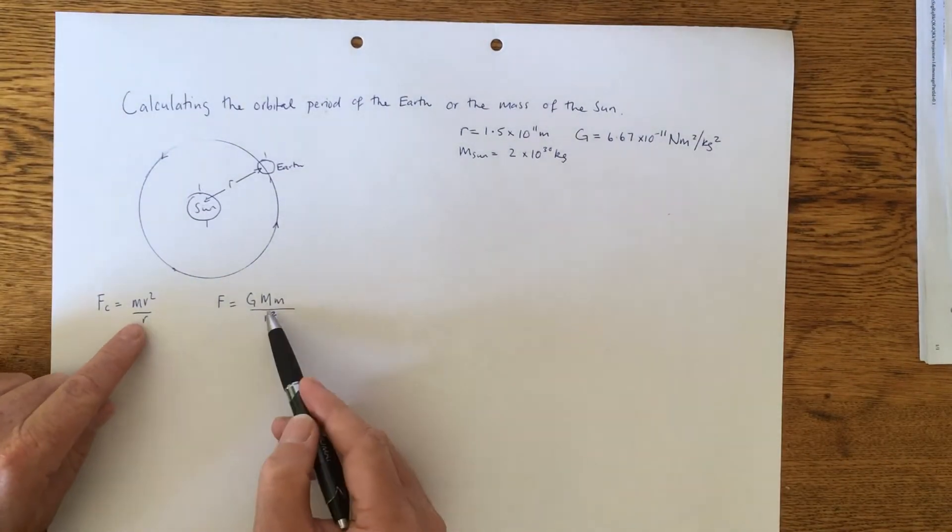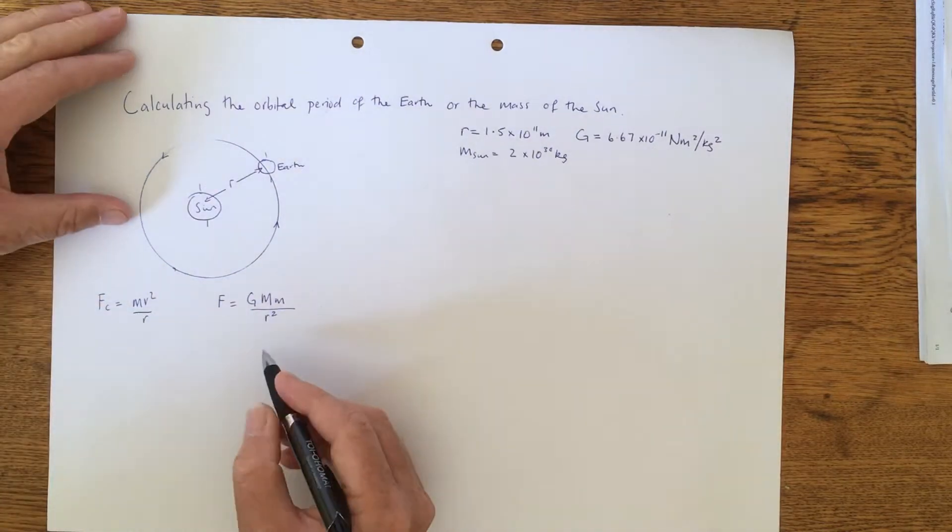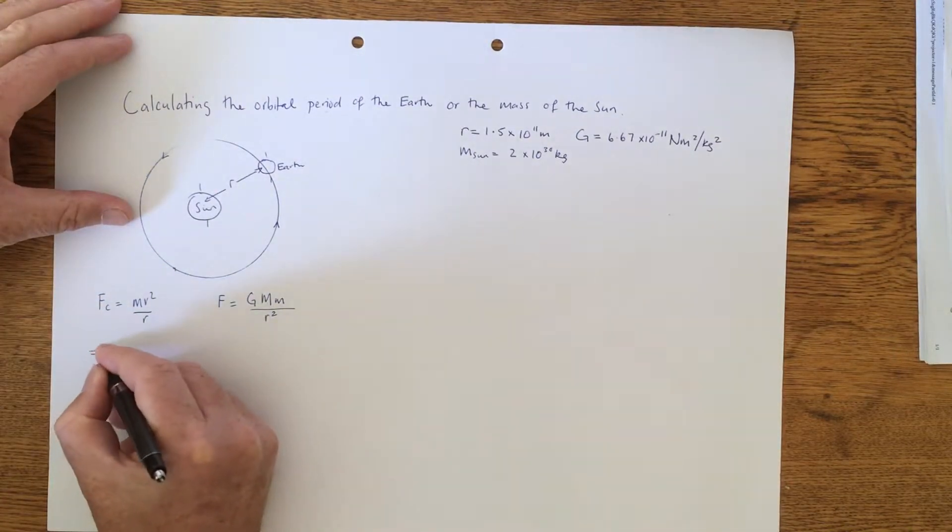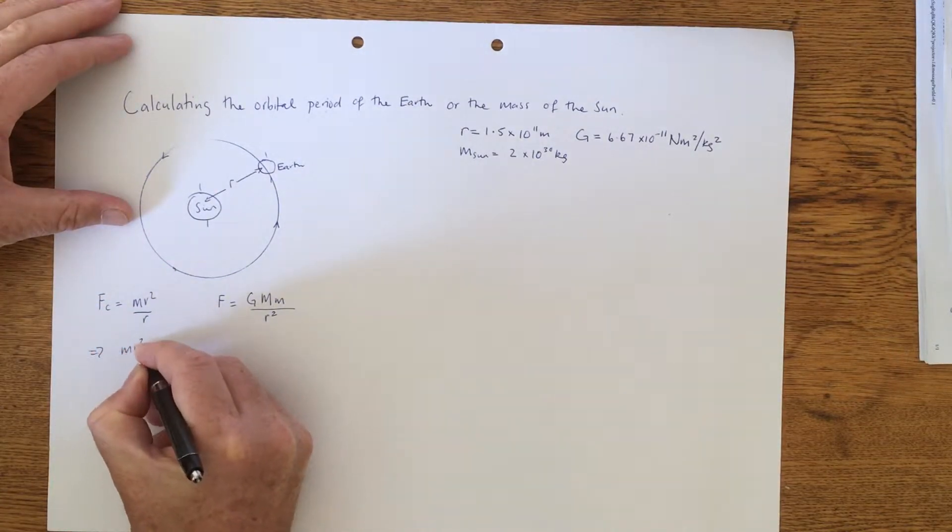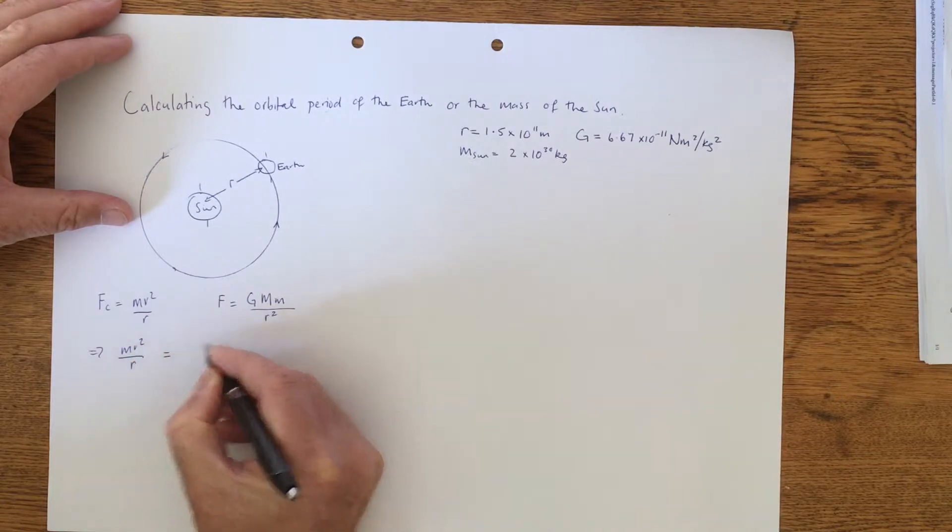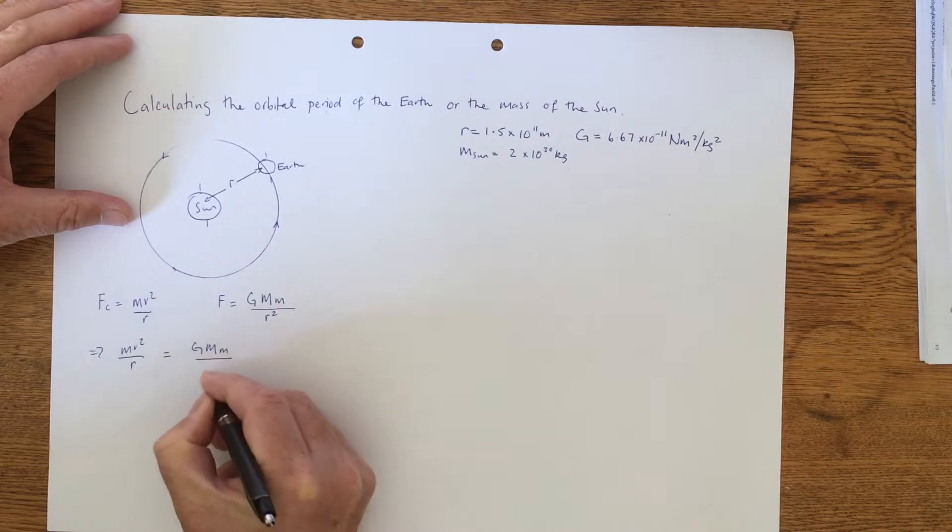So therefore we can actually, these two equations equal one another. So let's do that: mv squared equals GMm over R squared.